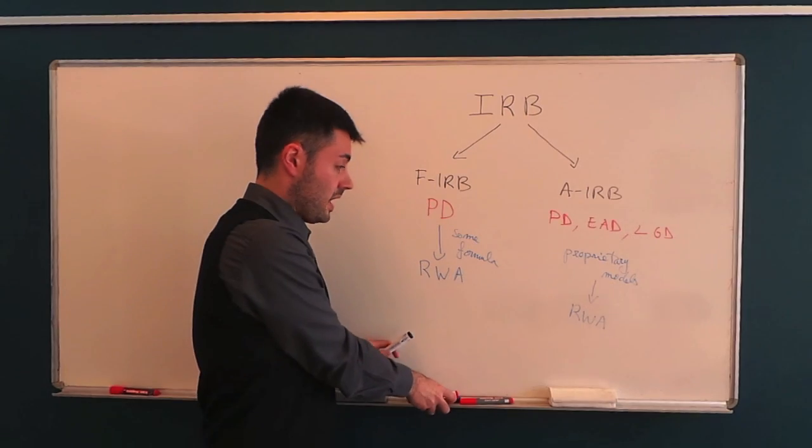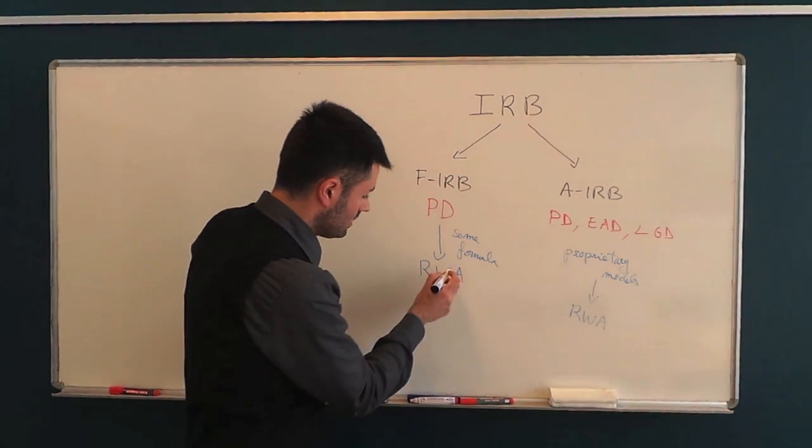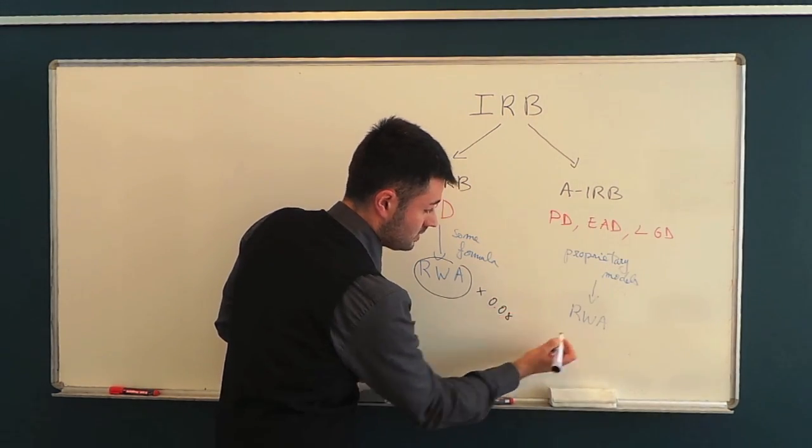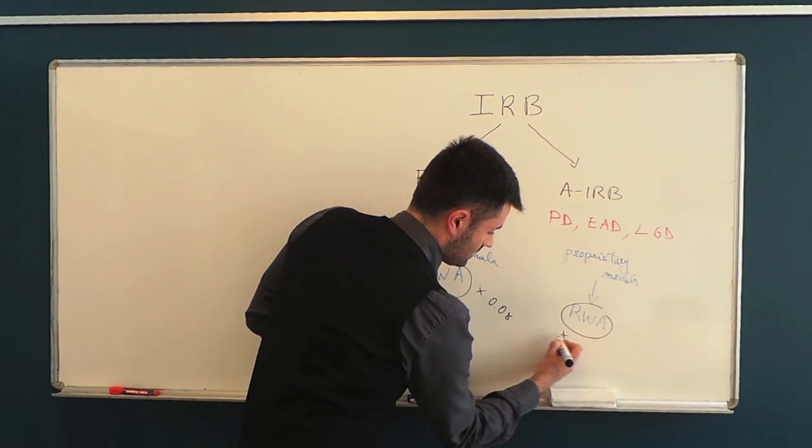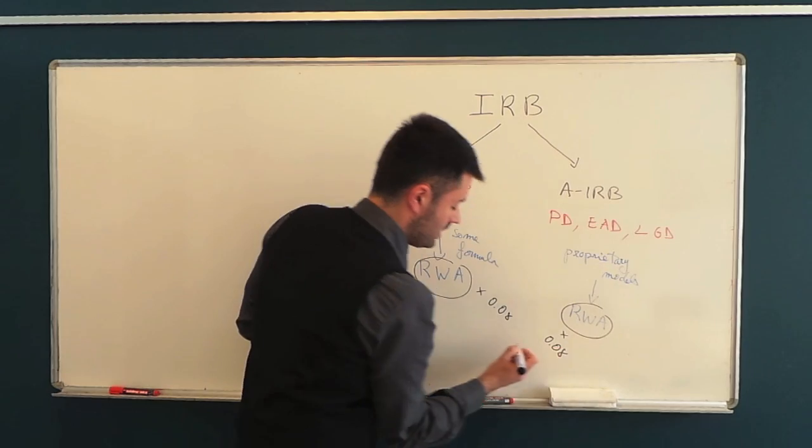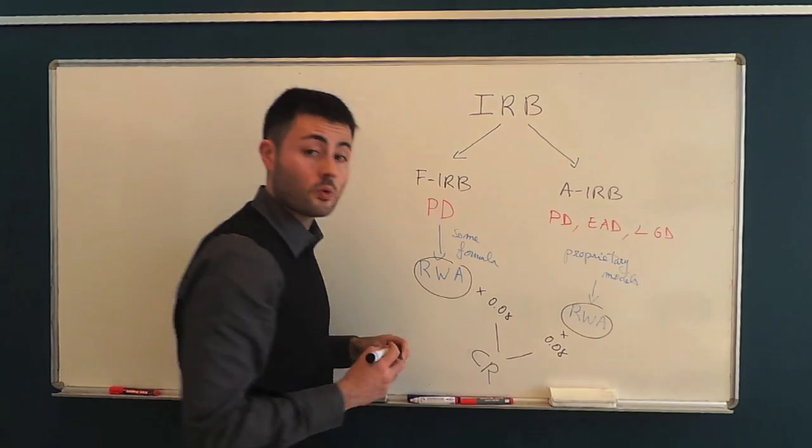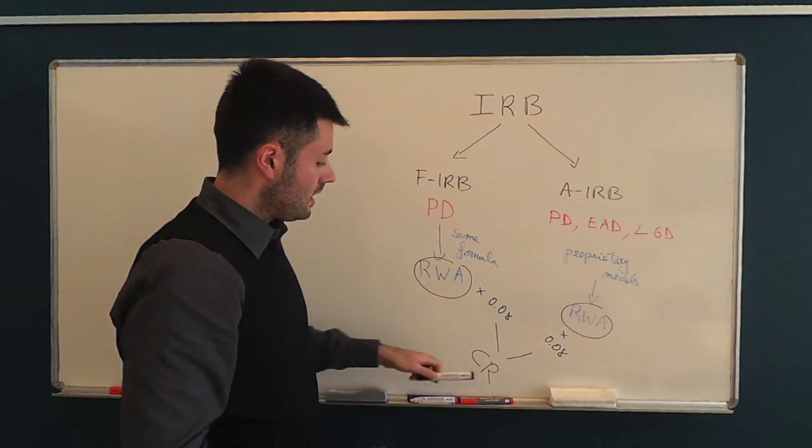Once they have the risk weighted assets, you know, by now better than me, that we have this, times 0.08, or this, times 0.08, and these are our capital requirements.